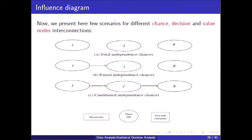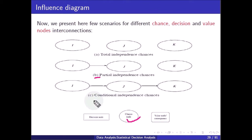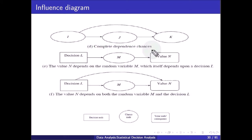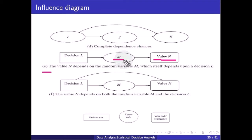Here are scenarios for different chance, decision, and value nodes. For I, J, K as totally independent chances: in one figure K is independent but J is dependent on I while I is also independent. For conditional independent chance: K is dependent on J, J is dependent on I, and I is an independent chance. In another figure, the value node N depends on the random variable M (a chance node), which itself depends on decision L.